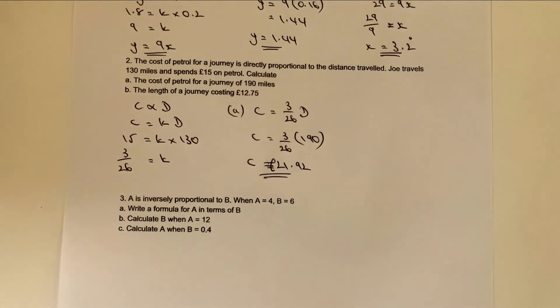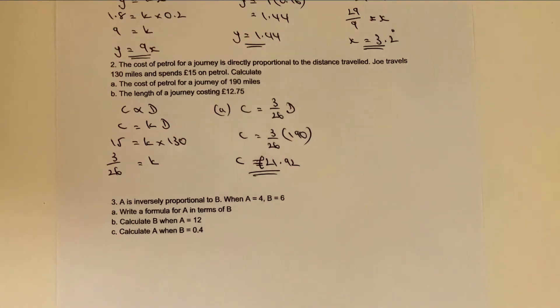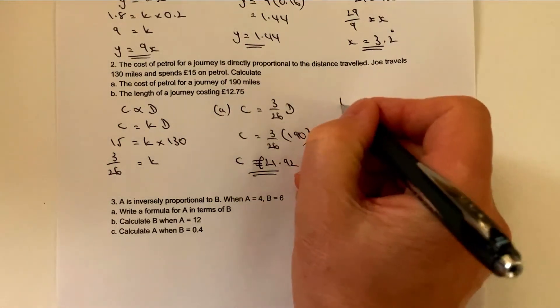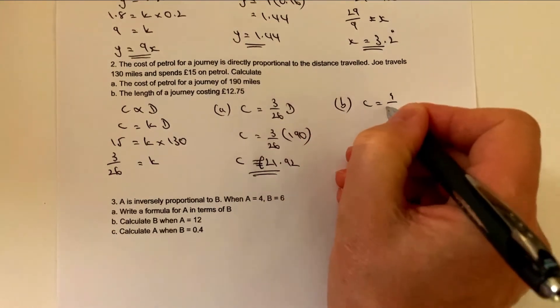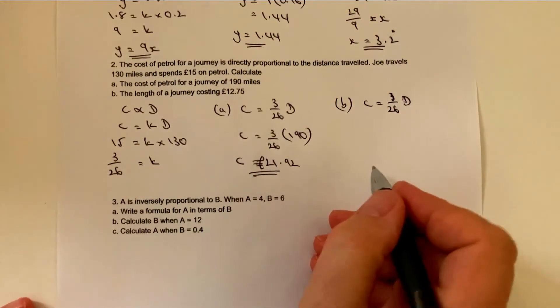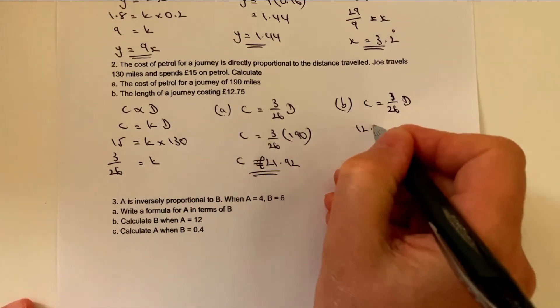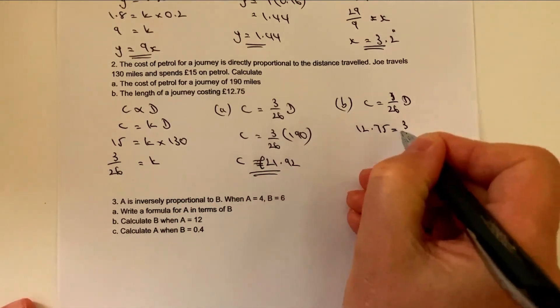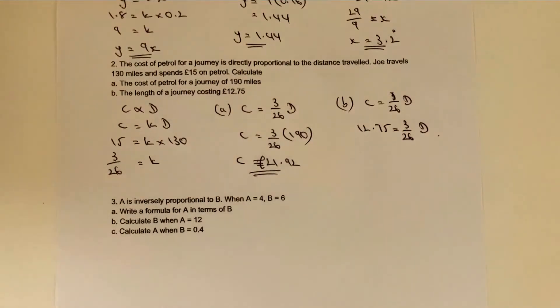Let's move on to part B. And again, very similar to the way we had to deal with the one at the top. We're going to use exactly the same formula. For part B, I've got cost equals 3 over 26 d. In this particular case, we're told that the cost of the journey is actually 12.75 equals 3 over 26 d. So a little bit awkward, but again, you would use a calculator to divide both sides by 3 over 26.